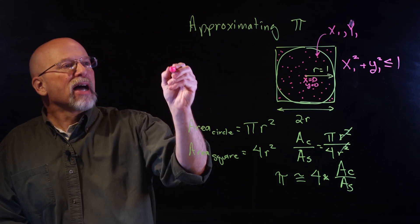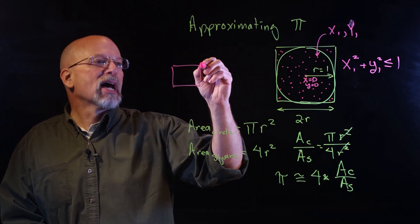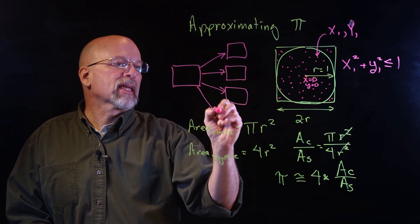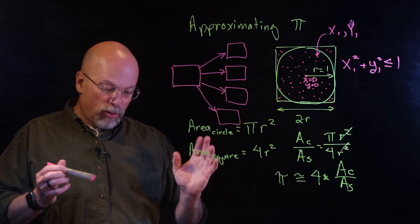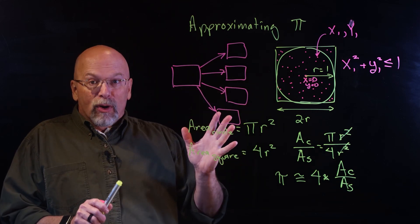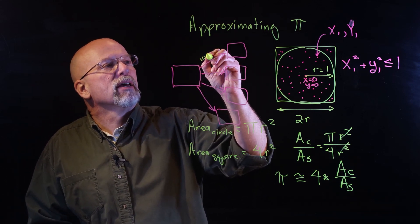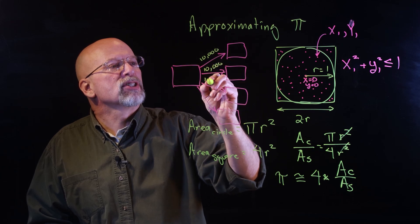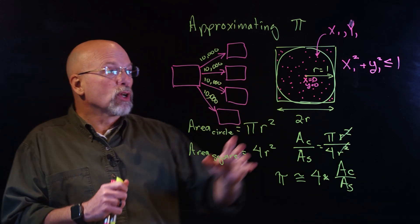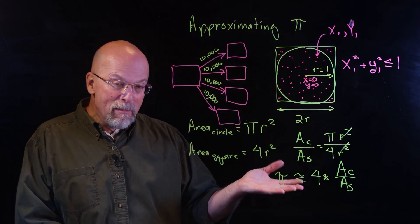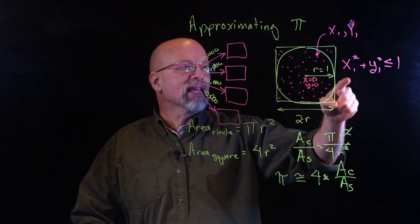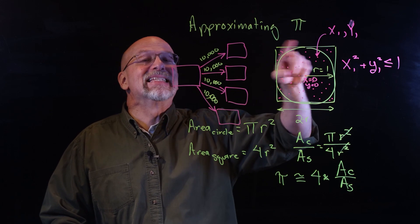So I've got one controlling node inside of my MIMD system, and it's got a bunch of peripheral nodes that it can pass tasks off to. Everybody knows this code, so that code is distributed to all of those processing units. All we do is send 10,000 off to each one of these nodes, saying I want you to come up with 10,000 random points. Each one of them is going to come up with 10,000 random points and figure out if each generated point is inside the circle or not.